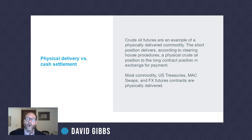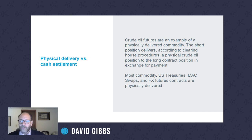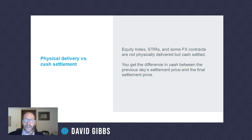Physical delivery imposes pricing integrity on futures relative to the underlying market, because a futures contract is a derivative — it derives its value from something tangible. In the case of crude oil, it's crude oil; for treasury futures, it's treasuries. The E-mini S&P 500 is financially settled to the index, and any open interest at the last trading day is transferred through a cash payment to the previous day's settlement value.